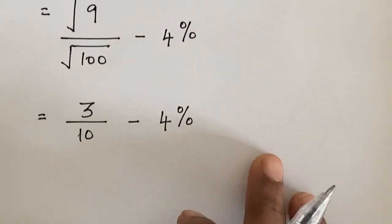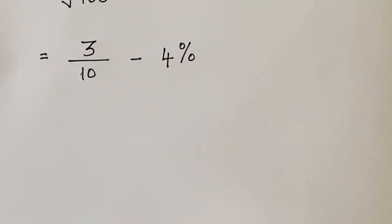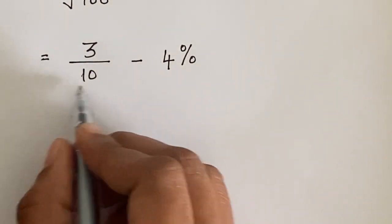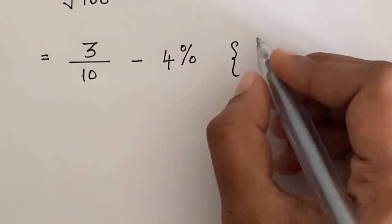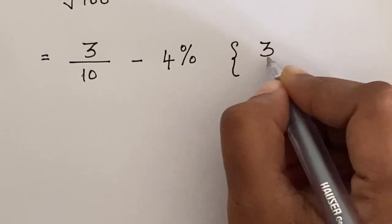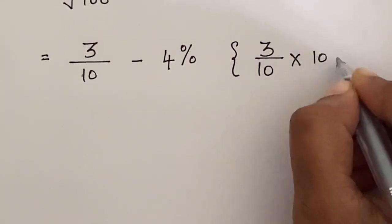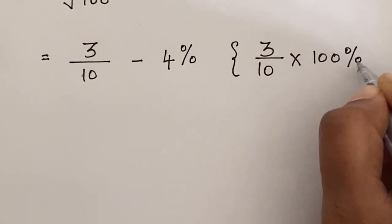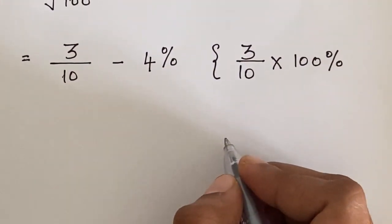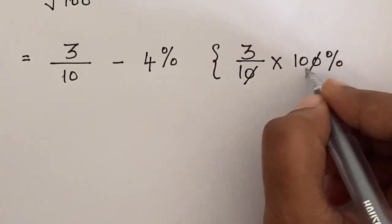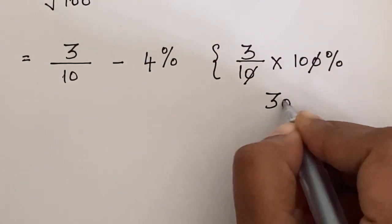So here we have a fraction 3 over 10. So to convert this into percentage, we simply multiply by 100, that is 3 over 10 times 100. So if we cancel out 10 and 100, we get 30 percentage.